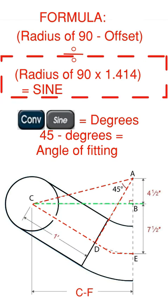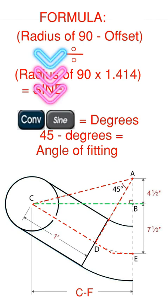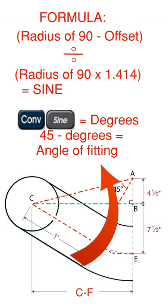That's going to give you a sine number. Then you're going to press convert sine. That's going to turn it into degrees. And that degrees you're going to take off of 45 and it's going to give you your angle of fitting.